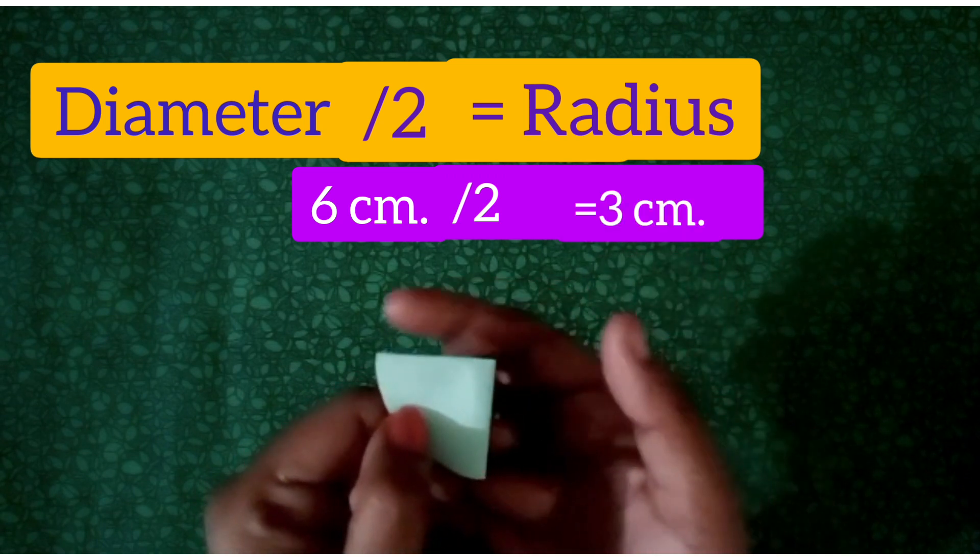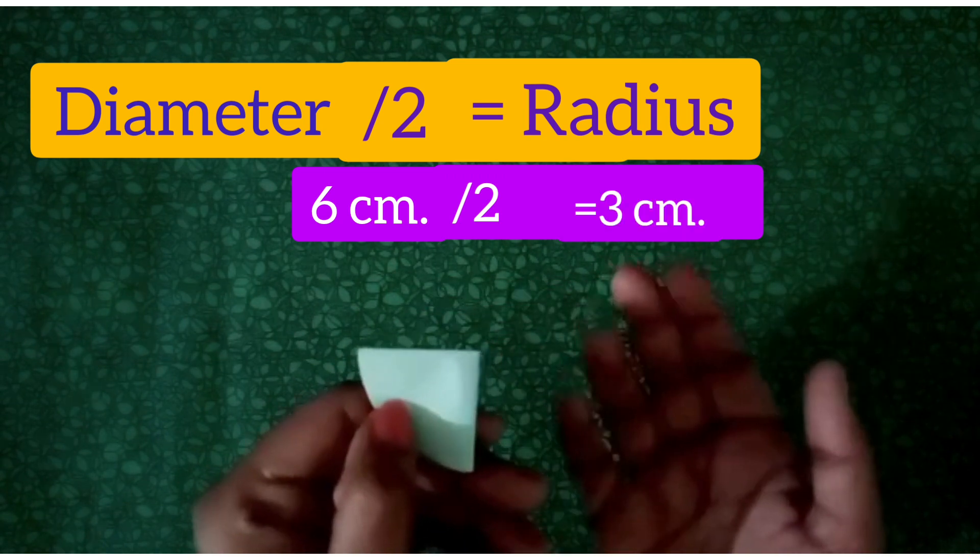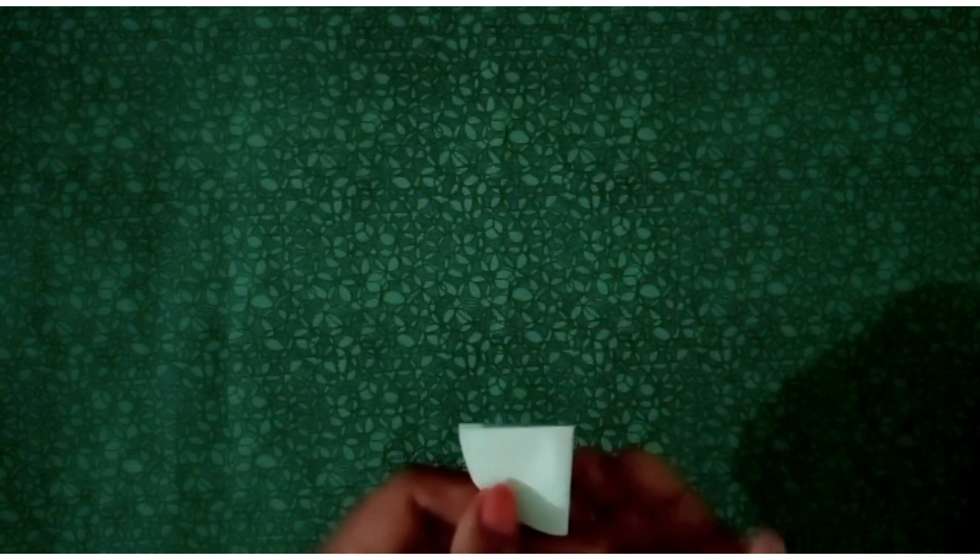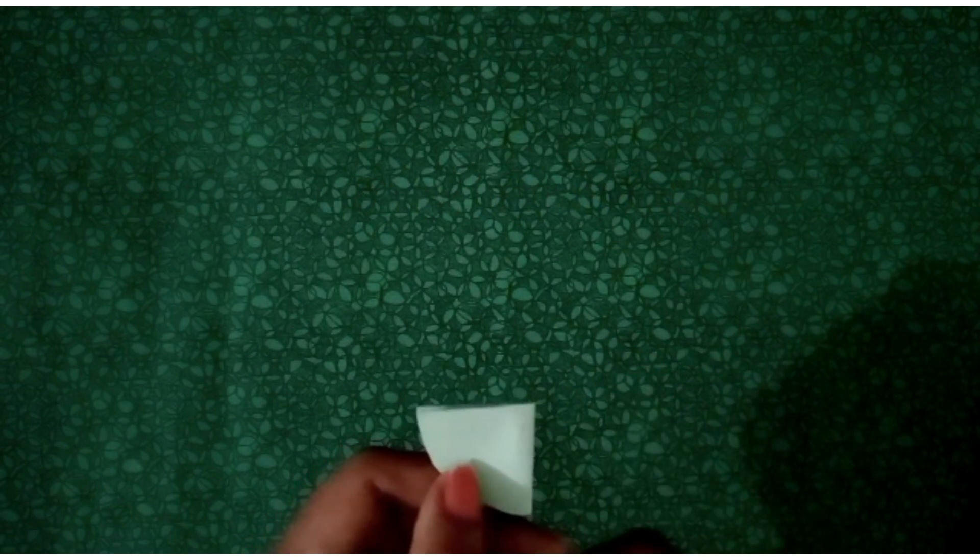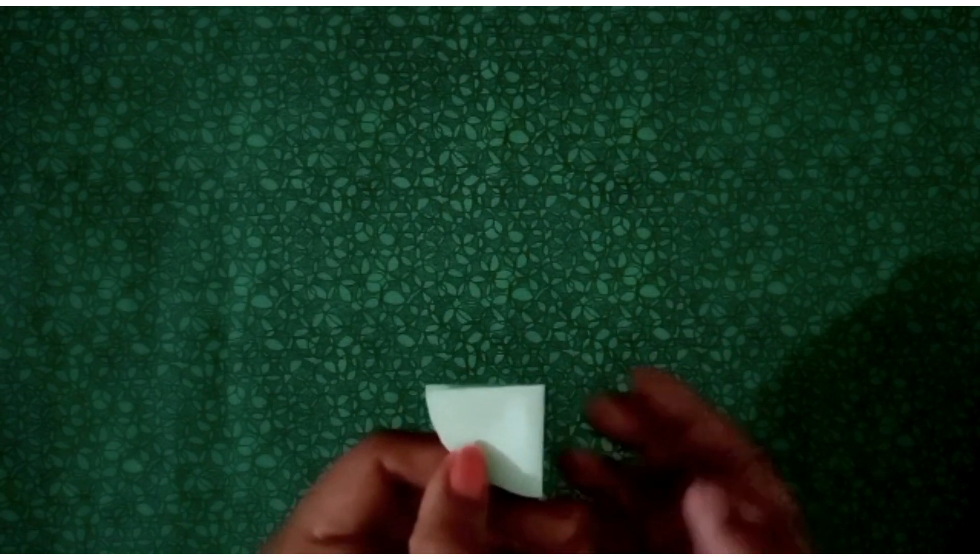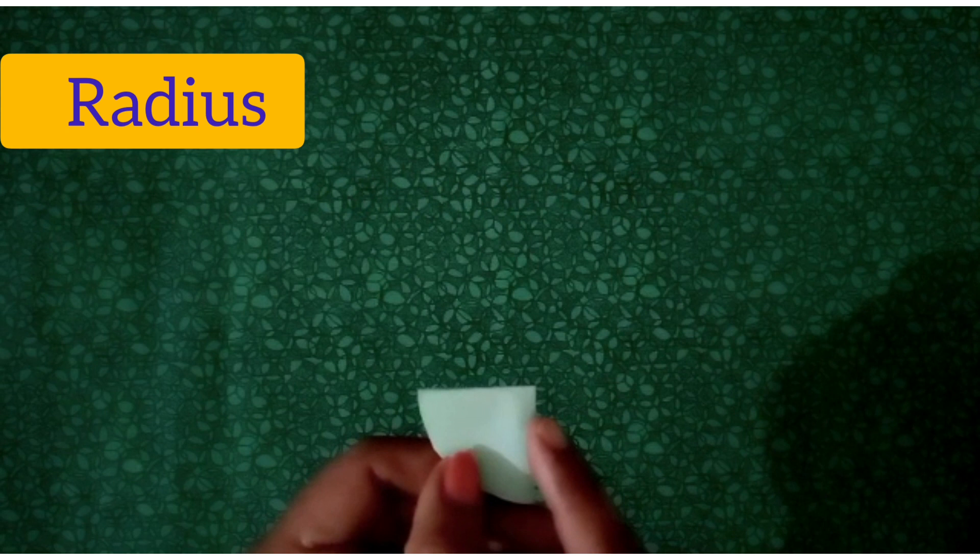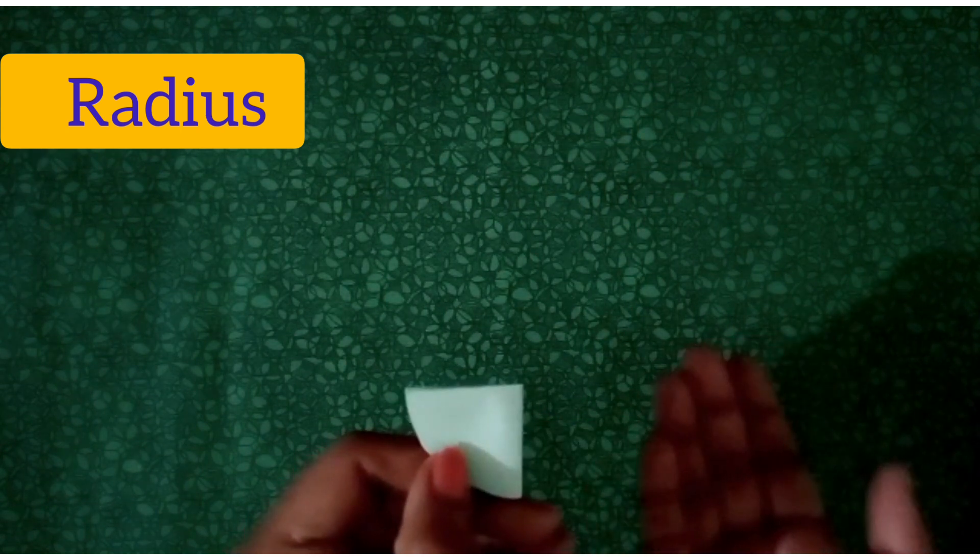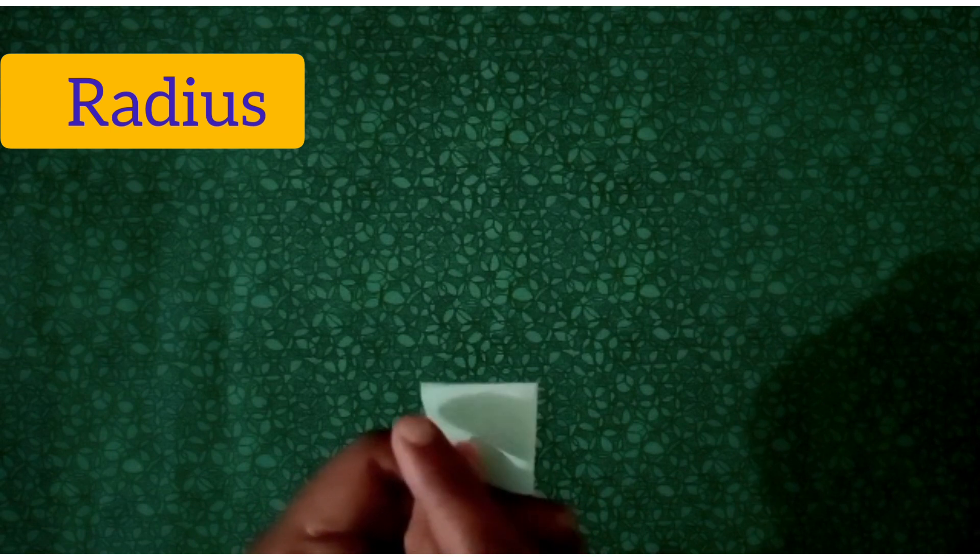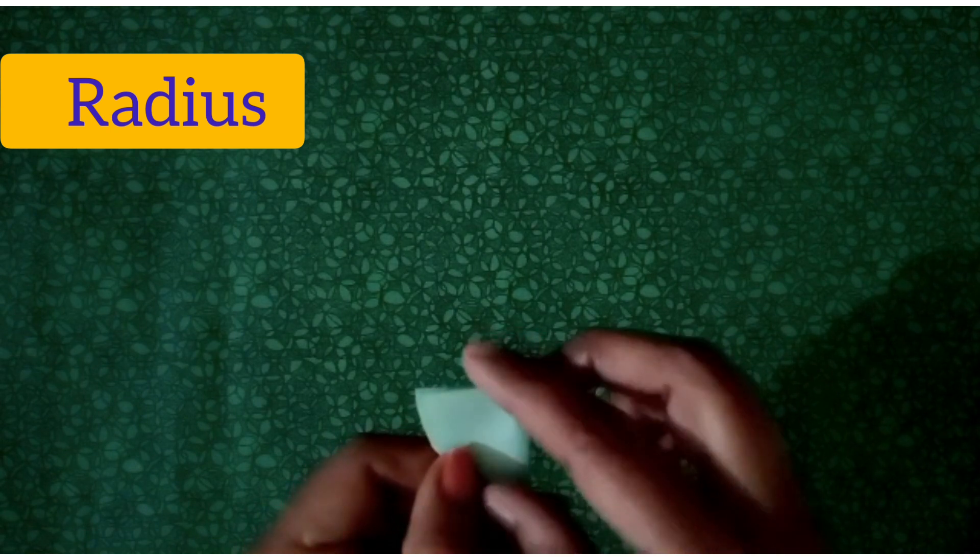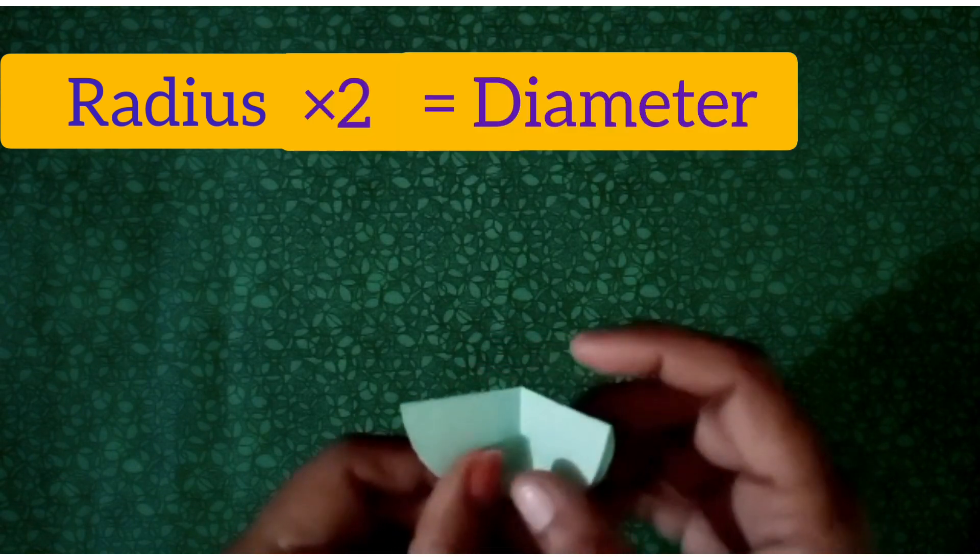So this was the case if diameter is given, then how to find the radius. Now if radius is given, then how will we find the diameter? We will double the radius to get the diameter. It means if we have to find the diameter, then it's 2 into radius.